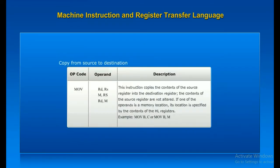Here is a list of move instructions for the Intel 8085 microprocessor. This instruction copies the contents of the source register into the destination register. The contents of the source register are not altered. If one of the operands is a memory location, its location is specified by the contents of the HL registers.